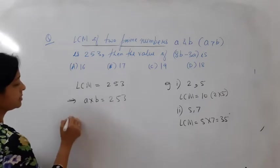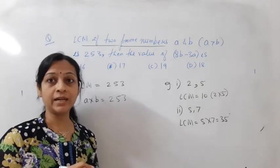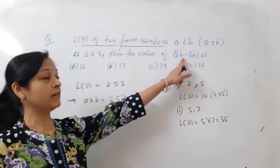So this is A into B equals 253. Now you have to find A and B to get the value of this expression.